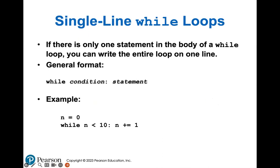Single line while loops also exist in Python. If you're not doing much inside your loop, you can put it all on one line. For example: n equals zero, then while n is less than 10, n plus equals one. We're not printing anything; we're just creating a loop to add one to n with each iteration.